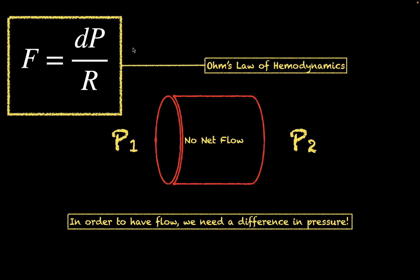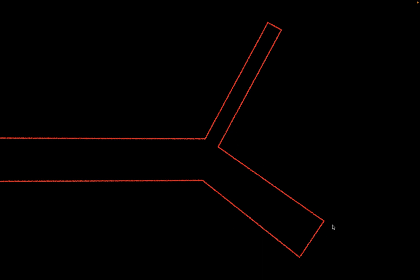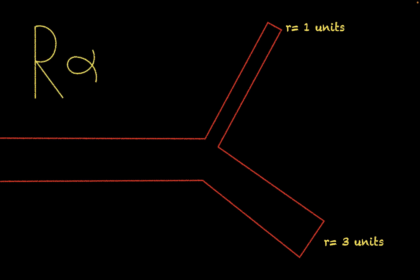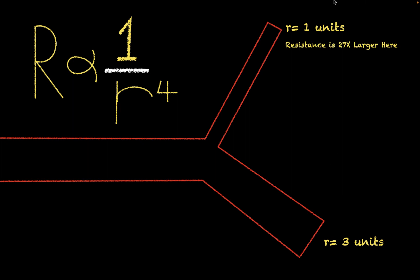This brings up the question: what is resistance? Consider a tube that divides into two segments, each with a different radius — one with a radius of 3 units and one with a radius of 1 unit. Resistance is indirectly proportional to the radius to the fourth power, meaning a small change in radius greatly affects resistance. The segment with radius equal to 1 unit has a resistance 27 times larger than the segment with radius equal to 3 units. So the radius is the biggest determinant of resistance.